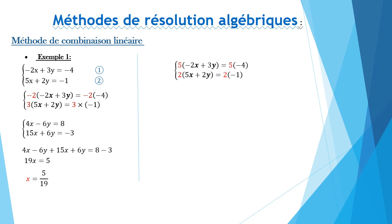Et pour déterminer la valeur de Y, on multiplie la première équation par 5 et la deuxième équation par 2. On simplifie, on développe et on trouve moins 10X plus 15Y est égal à moins 20 et 10X plus 4Y est égal à moins 2. En addition membre à membre, on simplifie et on trouve 19Y est égal à moins 22. Donc, Y est égal à moins 22 sur 19.